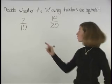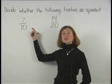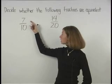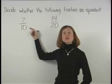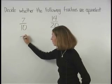So for our first fraction, 7 tenths, since the greatest common factor of 7 and 10 is 1, we know that our fraction is already written in lowest terms.